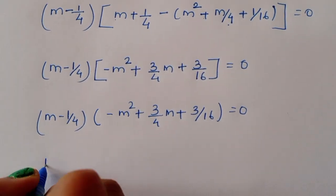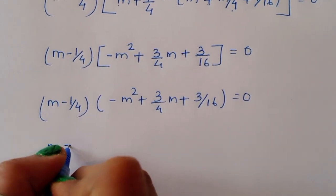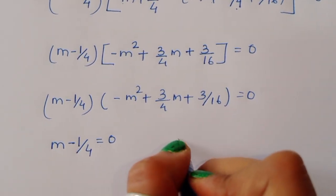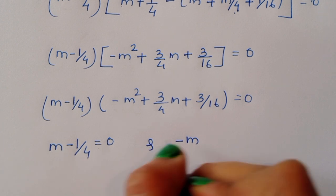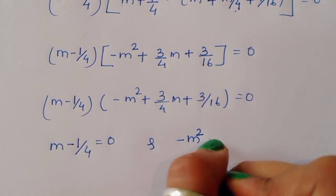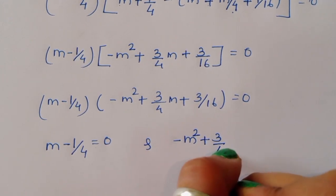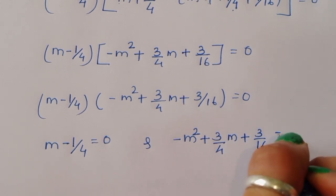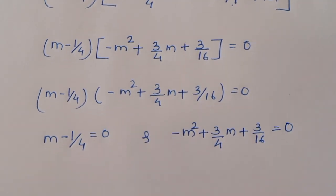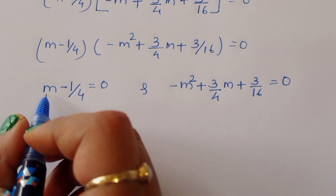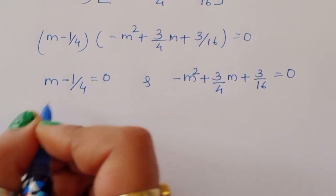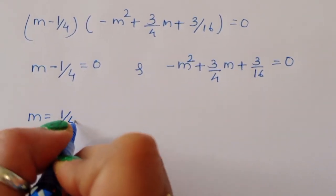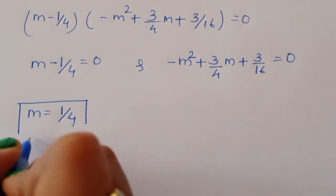So we have two equations: first, m minus 1 upon 4 equals 0; and second, minus m squared plus 3 upon 4 m plus 3 upon 16 equals 0. From the first equation, m minus 1 upon 4 equals 0, so m equals 1 upon 4. This is the first value of m.